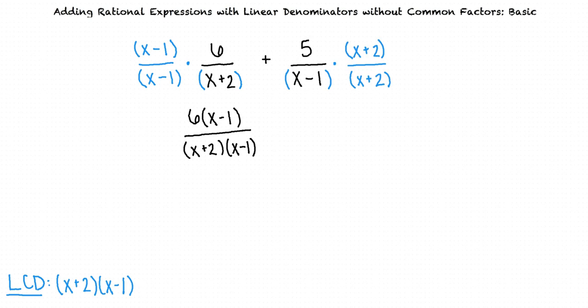Exactly. This results in 5 times the quantity x plus 2 over the quantity x plus 2 times the quantity x minus 1.